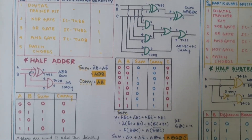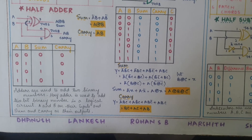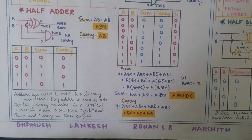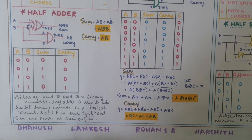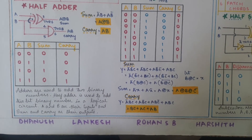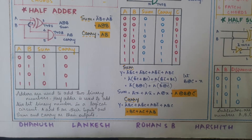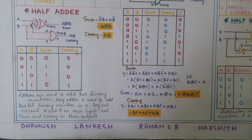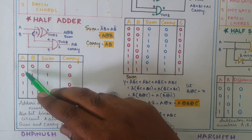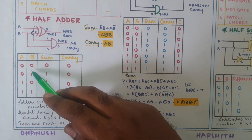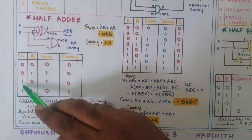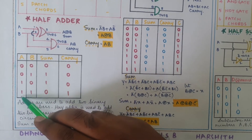Before we construct the circuit diagram, let's understand what a half adder circuit is. A half adder circuit is an electronic circuit which is able to add two-bit numbers. The possible combinations are 00, 01, 10, and 11.